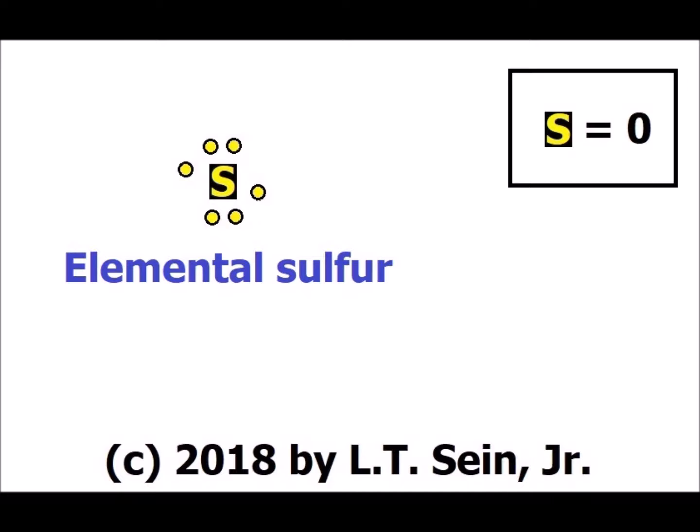In this video, we are going to discuss the element sulfur and its oxidation number in various compounds. Recall that sulfur is in the same family, the same column, of the periodic table as oxygen. Whereas oxygen has a valence configuration of 2s² 2p⁴, giving it 6 valence electrons, sulfur is 3s² 3p⁴, giving it also 6 valence electrons. When we draw a Lewis structure for sulfur as an element, we put 6 electrons around the chemical symbol S, shown in yellow because elemental sulfur in many of its allotropes is a yellowish color.